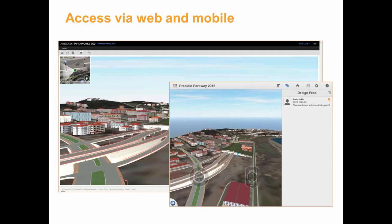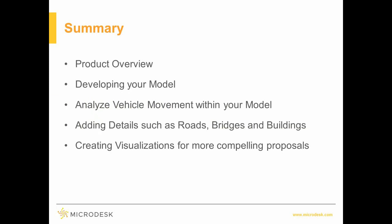You also have the ability to utilize web and mobile. If you're in the field with a tablet, you can pull up these models and use augmented reality, which interactively places you in the model when you're out in the field — the software shows you where you're at, which direction you're looking, and what you'd be seeing as you stand within the model. To summarize: we did a quick product overview, looked at how to develop your model and analyze vehicle movements using Vehicle Tracking software and Civil 3D, looked at adding different detail types, and finally creating visualizations and animations.